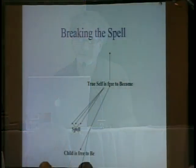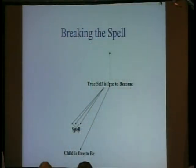When I work with clients to help them recognize their spell and then interrupt it, eventually the spell is held back by the true self. The true self gets stronger, gets reunited with the inner child, and both the inner child and the true self join together and get to become self-actualized.